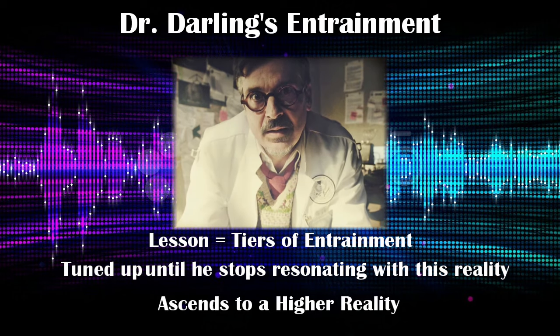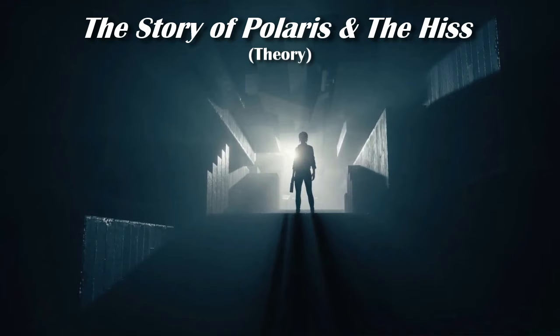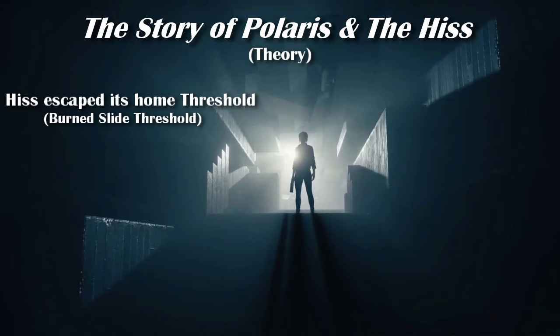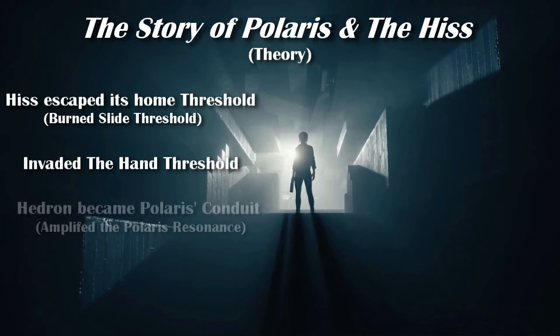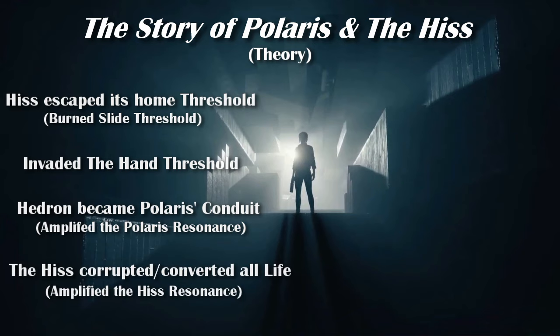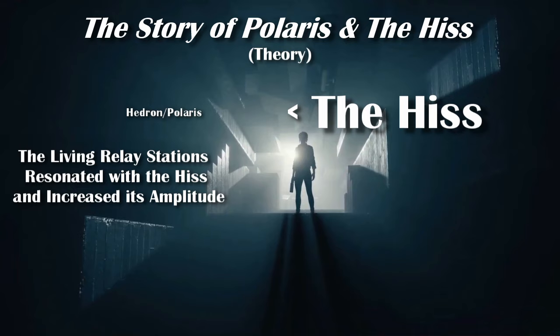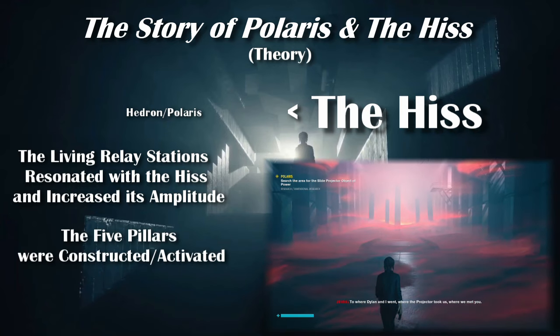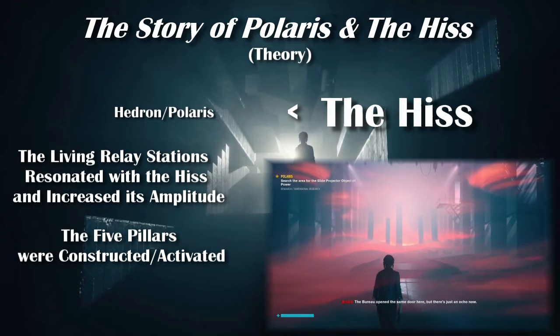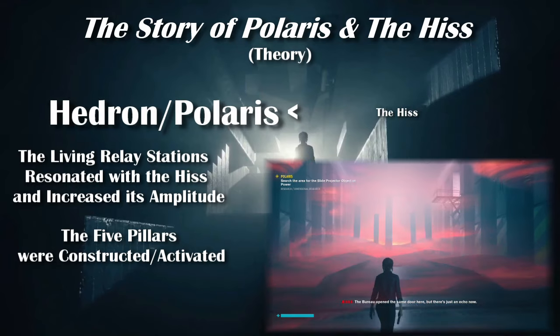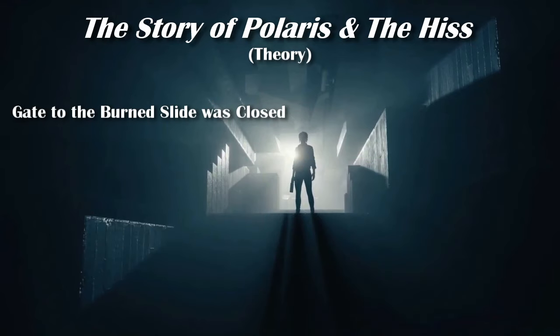With all this in mind, what is the true story of these two entities? This is a personal theory based on the available information. At some point in the past, the Hiss escaped from its home threshold in the Burned Slide and invaded the Hand. Hedron became the conduit for Polaris' resonance. The Hiss consumed all forms of life in the Hand, turning them into relay stations for its frequency, and the amplitude of the Hiss grew stronger as voices resonated with one another. Hedron and Polaris were unable to cancel it out fully. As Polaris refused to be viral and assume control of others, the five pillars witnessed during the Slidescape 36 expeditions were crafted — giant tuning forks that amplified the Polaris resonance enough to beat back the Hiss. The gate to the Hiss's home threshold was shut off, leaving only lingering remnants.